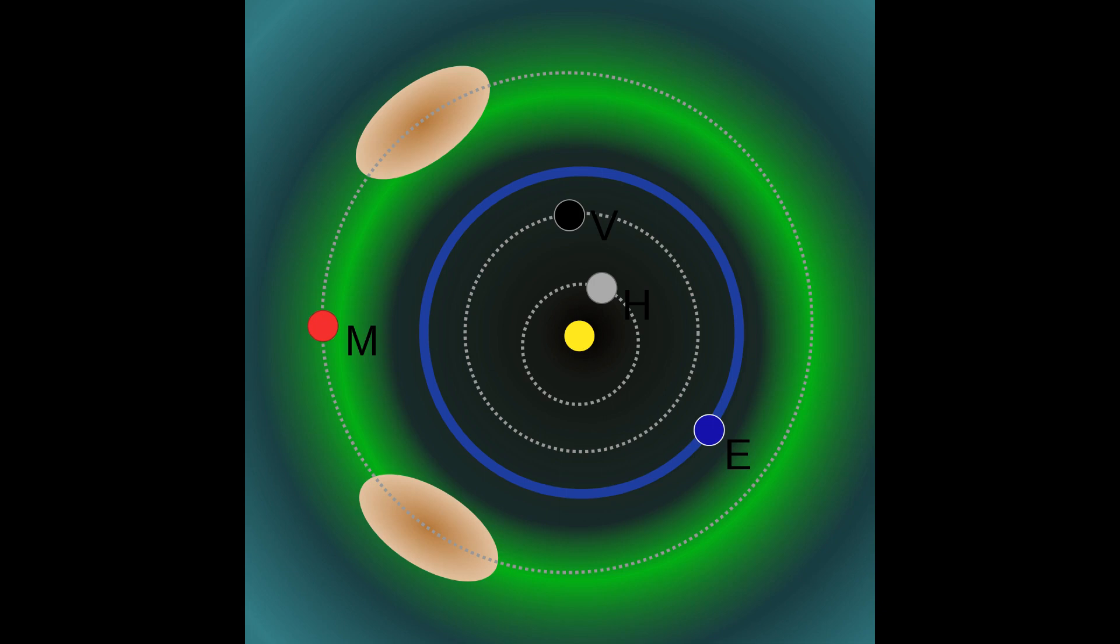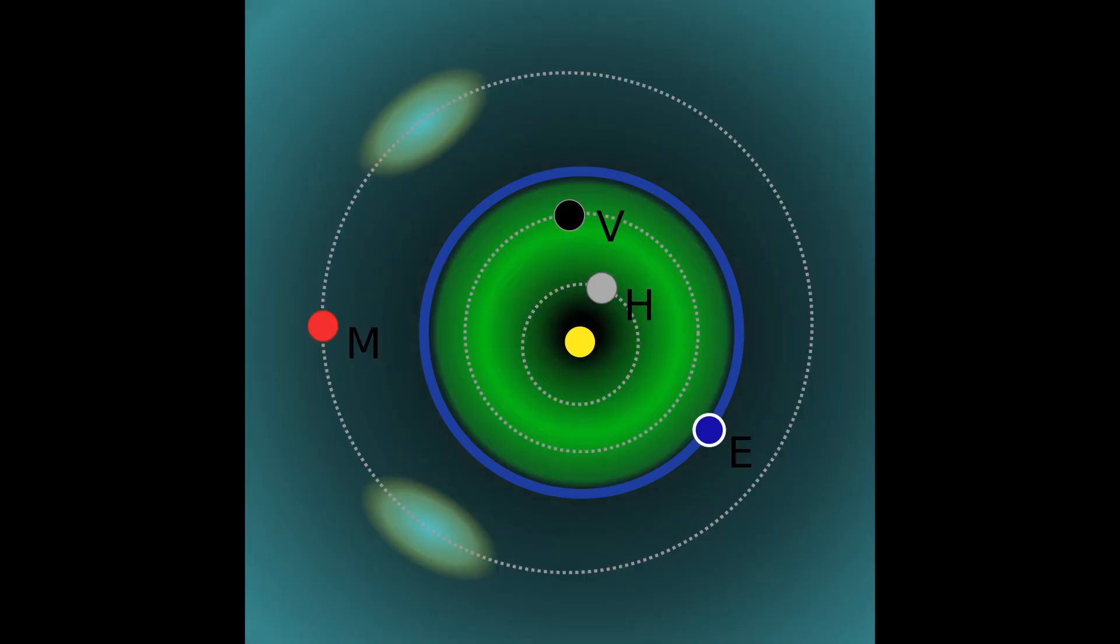A minor planet seen releasing gas may be dually classified as a comet. Objects are called dwarf planets if their own gravity is sufficient to achieve hydrostatic equilibrium and form an ellipsoidal shape. All other minor planets and comets are called small solar system bodies.